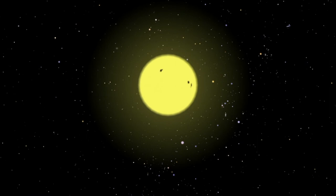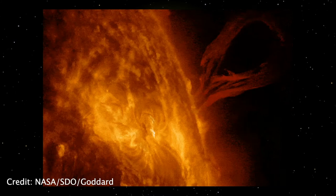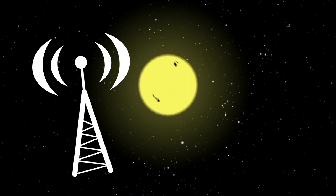Sunspots form in places where the Sun's magnetic field is particularly strong, so at sunspots we can get solar flares, a sudden explosion of energy caused by the crossing or reorganizing of these magnetic fields near the spots. If they are intense enough, they can sometimes affect radio waves and interfere with radio communications here on Earth.